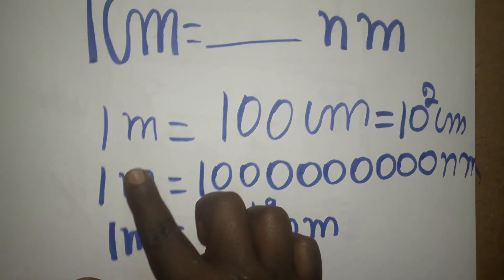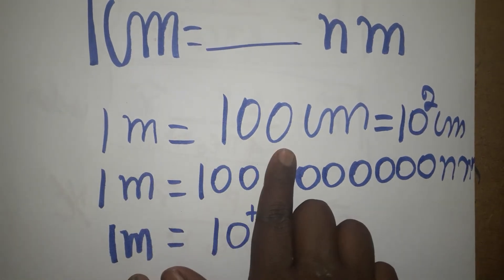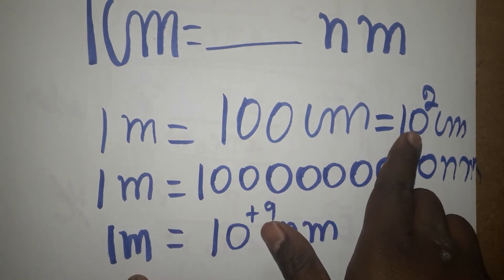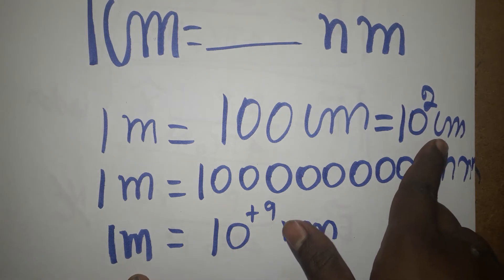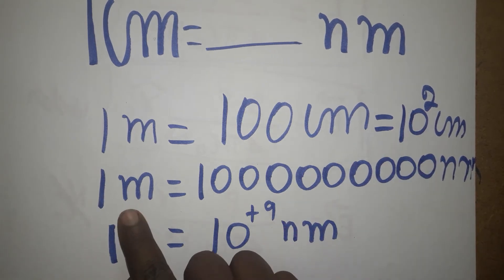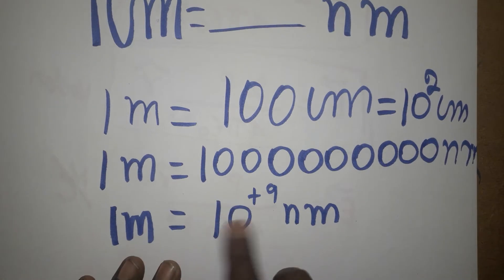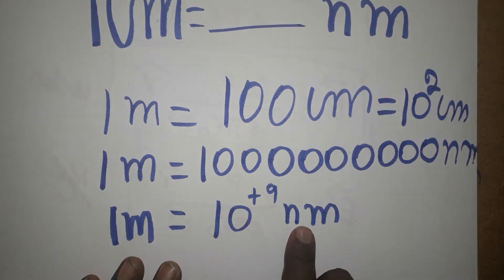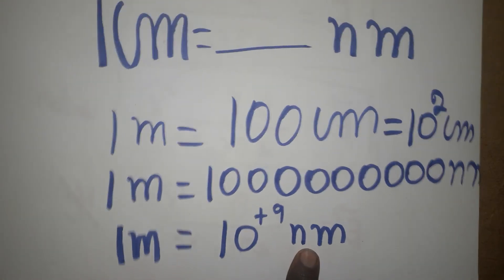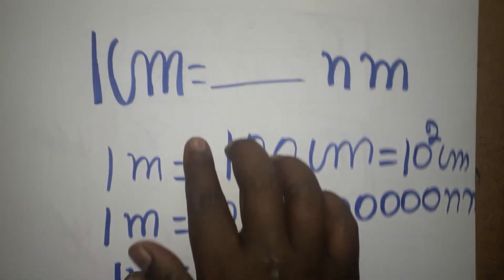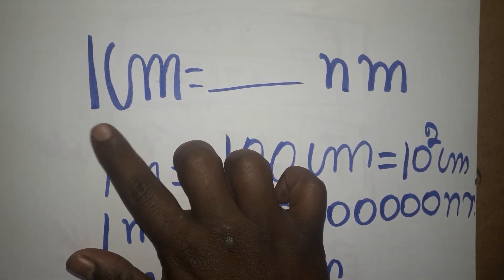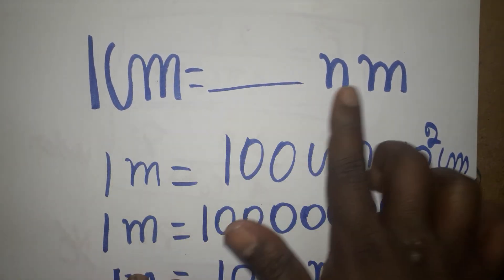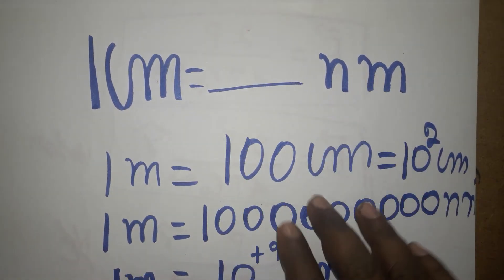So to recap: one meter is 100 centimeters, which we can write as 10 power 2 centimeters. One meter is 10 power 9 nanometers. Now we are going to learn how to convert from centimeters to nanometers.